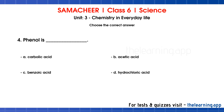Question 4. Phenol is dash. Options are: A. Carbolic acid, B. Acetic acid, C. Benzoic acid, D. Hydrochloric acid. Correct answer is A. Carbolic acid.